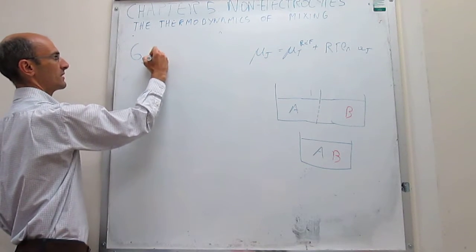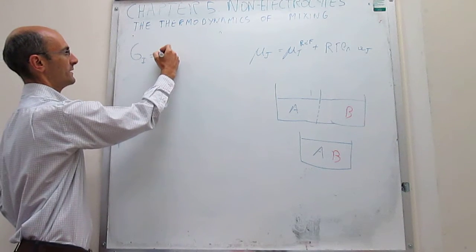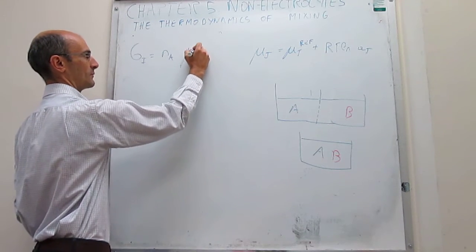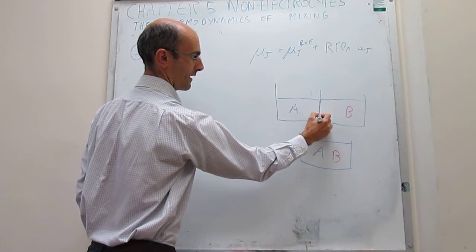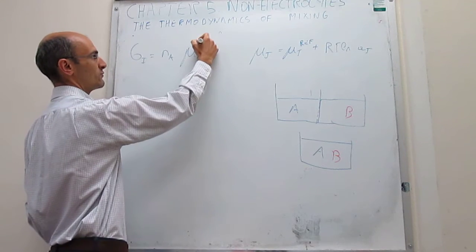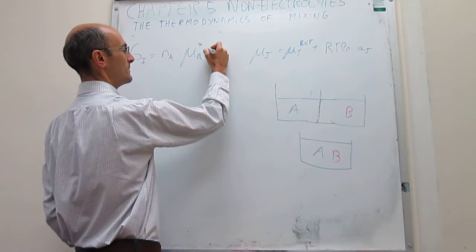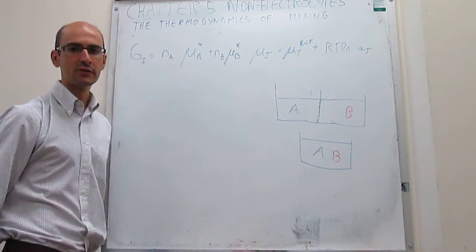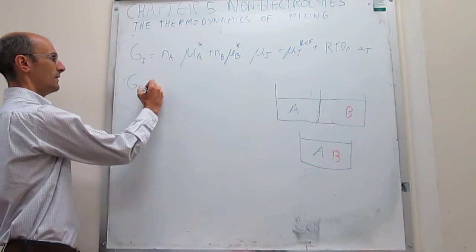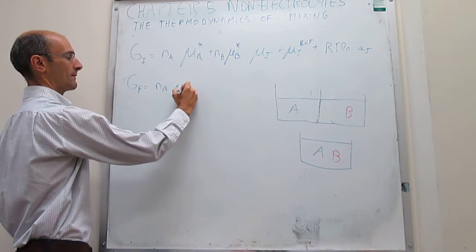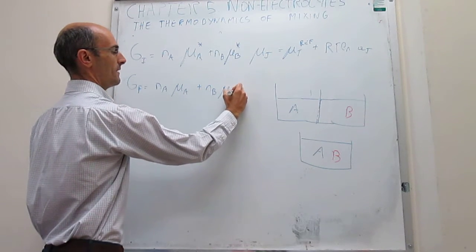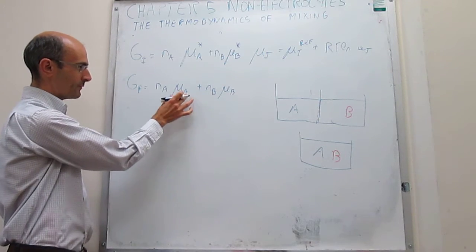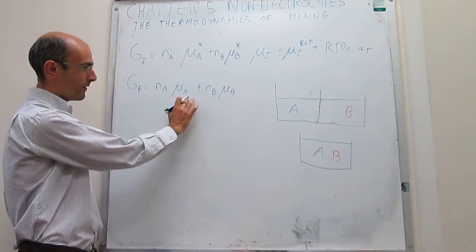Before mixing, the initial Gibbs energy is the number of moles of liquid A times the chemical potential of A, which before mixing is the chemical potential of pure A, plus the number of moles of B times the chemical potential of pure B. After mixing, the final Gibbs energy is the number of moles of A times the chemical potential of A, plus the number of moles of B times the chemical potential of B. In this case, these are no longer the chemical potentials of the pure substances, because they are in the mixture. The question is: what are these chemical potentials? That's what we've been working out in the last few videos.